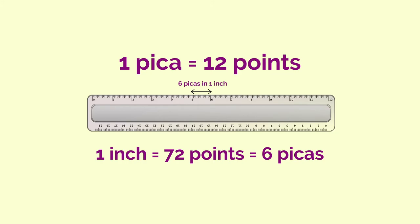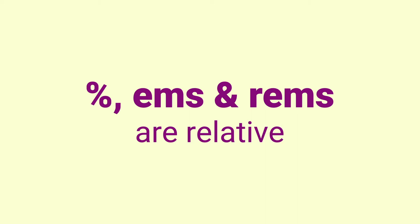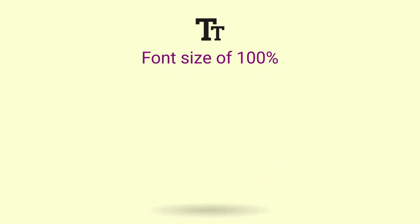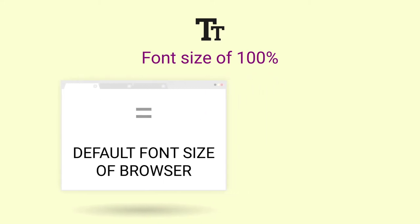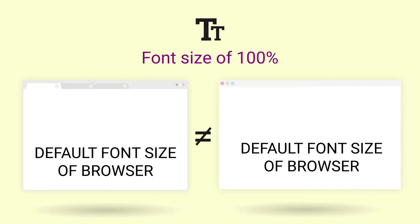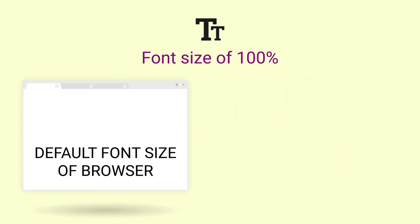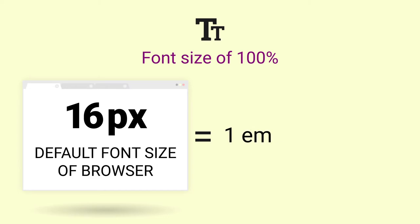While points, picas and inches are fixed in nature, percentage, em and rem are relative. A font size of 100% is equal to the default font size setting of your browser, so it may vary from browser to browser or device to device. Let's assume your browser is set to 16px default font size, which most browsers are out of the box. Unless you change them, then 100% equals 16px equals 1em. This 1em can also be defined as the width of a capital letter M at the default font size.